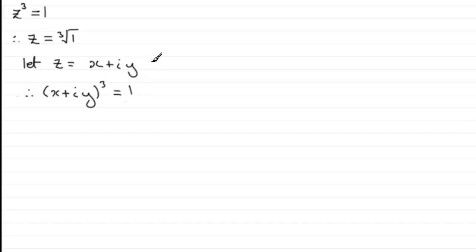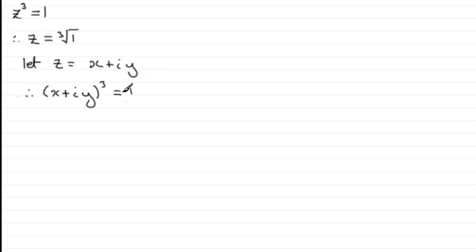One of those answers is the obvious one: z equals 1, and the other two form a complex conjugate pair. But what happens if we had z to the power 10 equals 1? There would be 10 solutions, and we'd have to expand x plus iy to the power 10 — imagine expanding that and comparing real and imaginary parts. It'd be a nightmare, so there must be a better method.